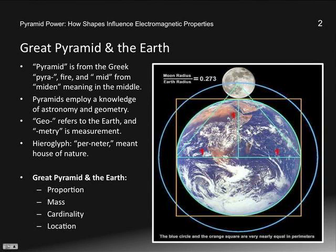Pyramids employ a knowledge of astronomy and geometry. Geo refers to the Earth, and metri refers to measurement. The hieroglyph per netter, attributable to the pyramid, meant house of nature.